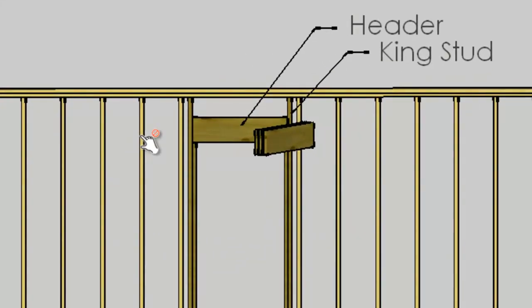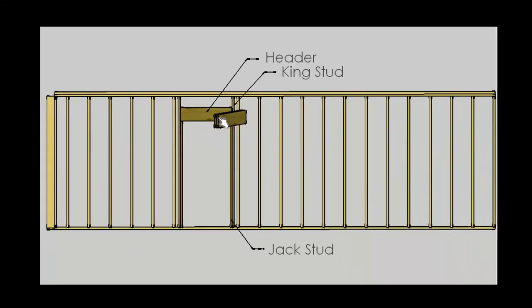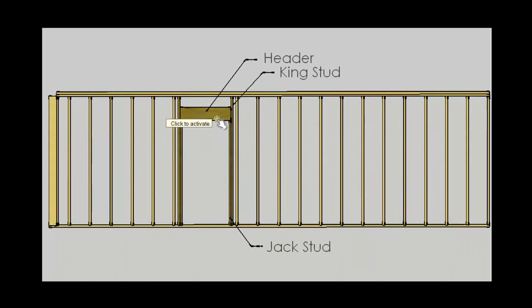Commonly, a header is made up of multiple pieces of dimensional lumber sandwiched together with filler pieces between the layers — typically plywood or OSB. Products such as LVLs, LSLs, I-beams, and timbers can also be used for a header. For the header to transfer overhead load from the top plate, that load has to reach the header, and this is achieved by smaller studs called cripples.